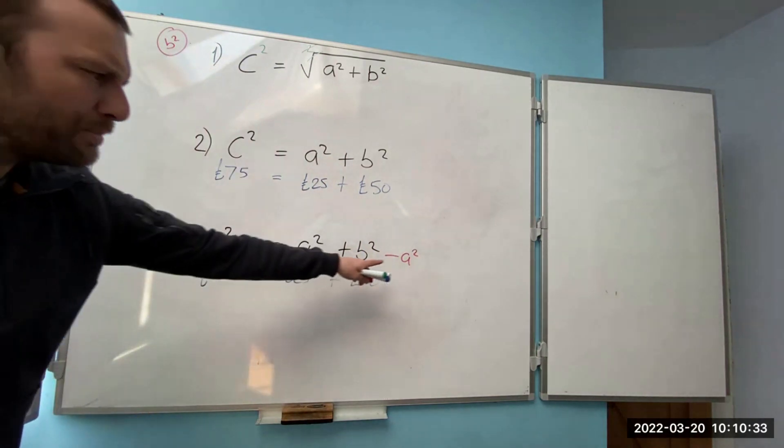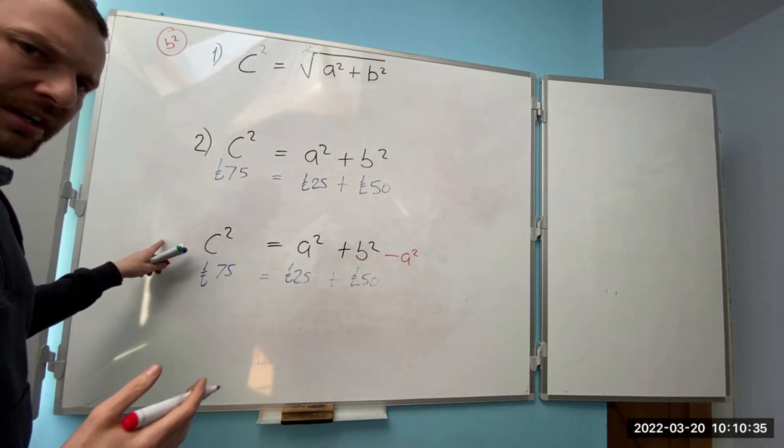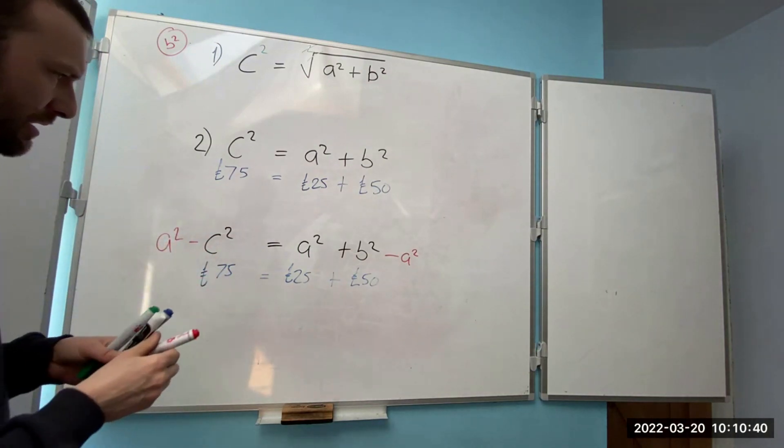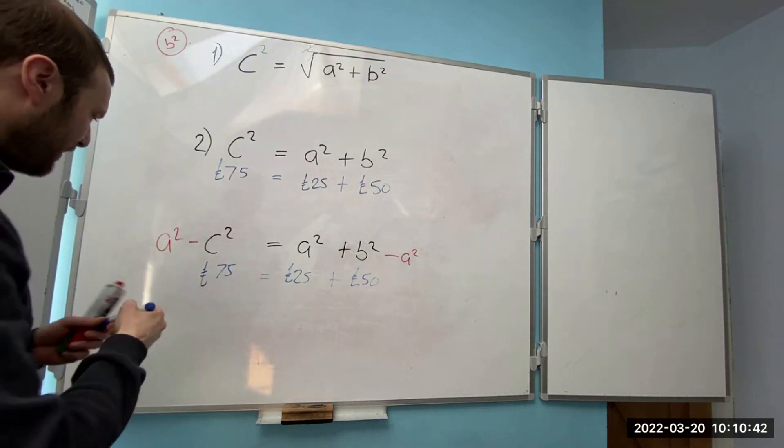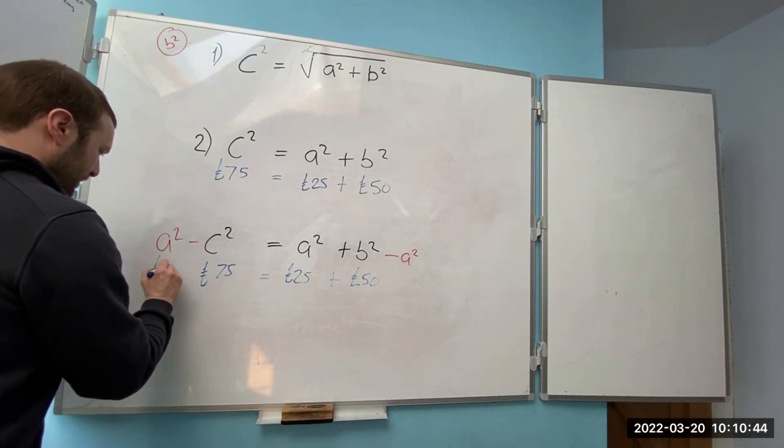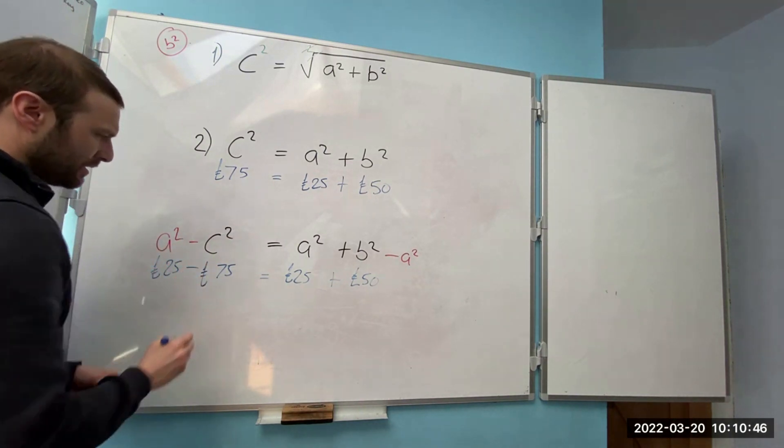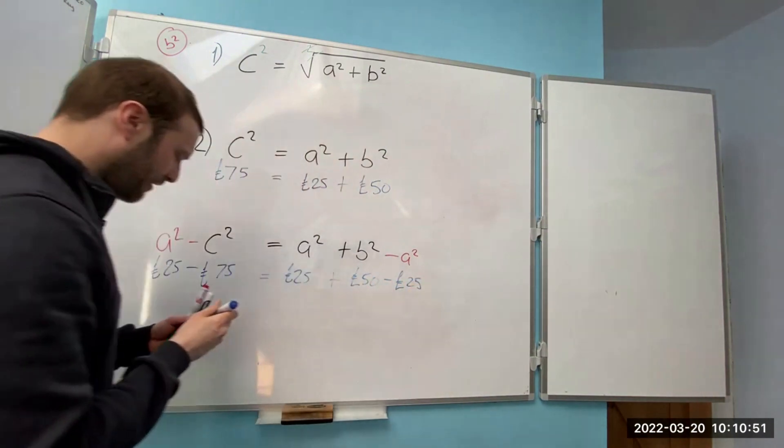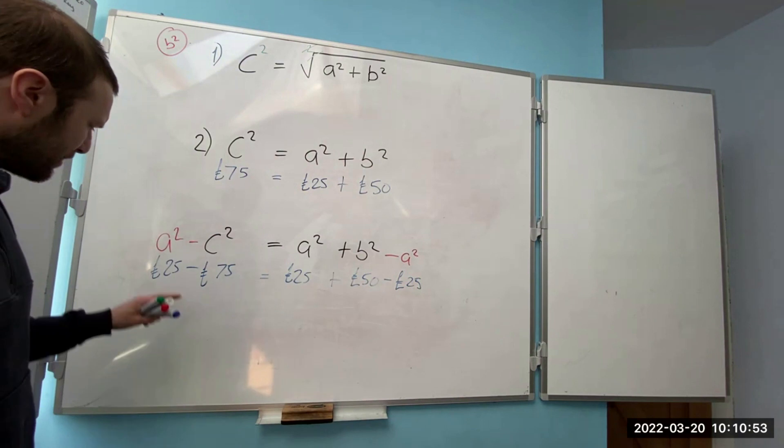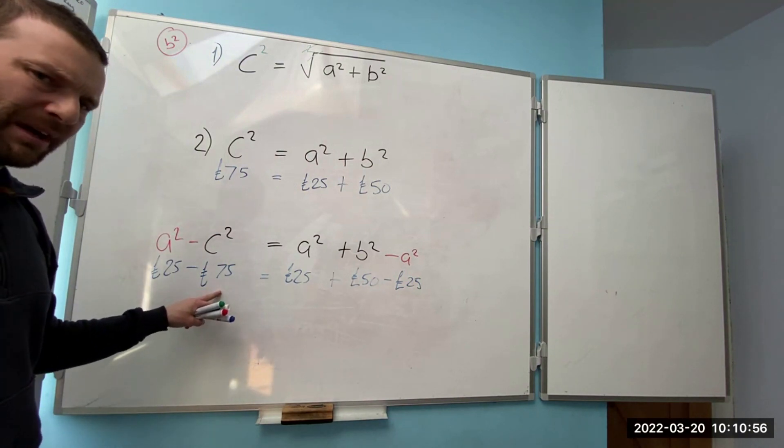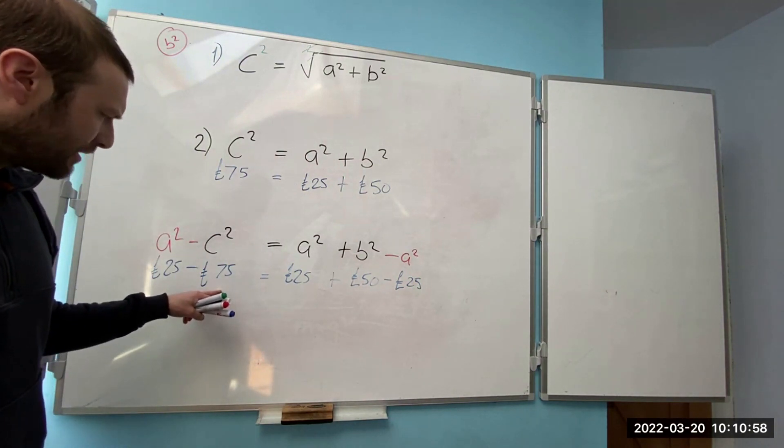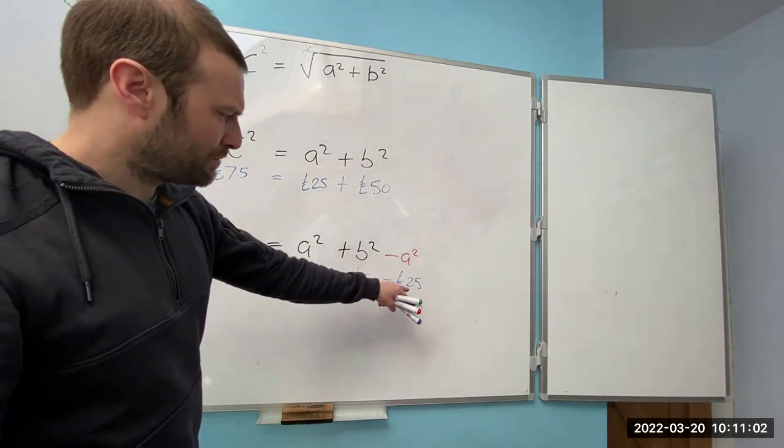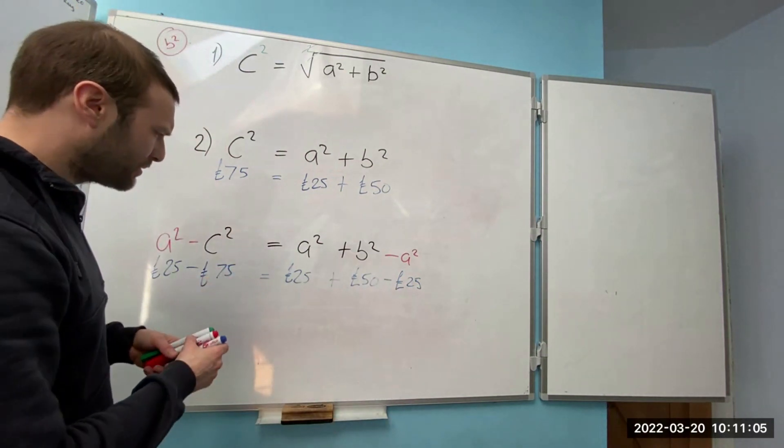I know that I need to minus the a squared away. If I move that onto the wrong side of c squared well then I end up with a squared minus c squared. And then if I put the values in so that's 25 pounds, I've now got 25 pounds minus 75 pounds well that puts me into negative figures.